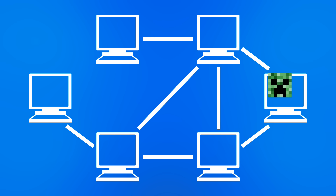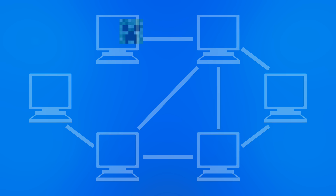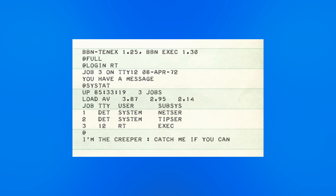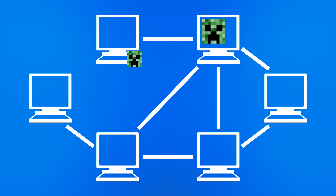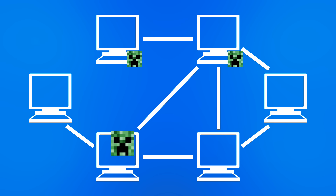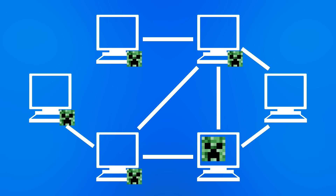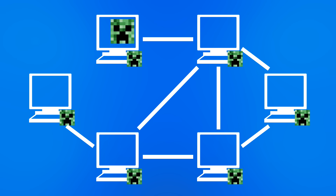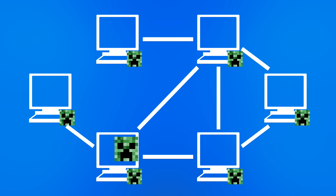The only trace it left was a message printed out onto the teletype terminal, reading 'I'm the Creeper, catch me if you can.' Later versions of the program would drop a copy of itself on the visited machine, making Creeper the first program to automatically spread copies of itself to other machines — in other words, the first computer worm.